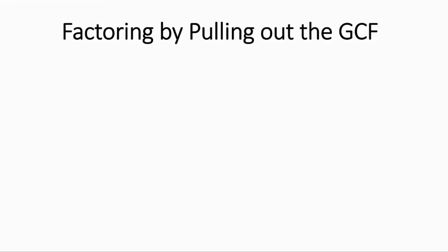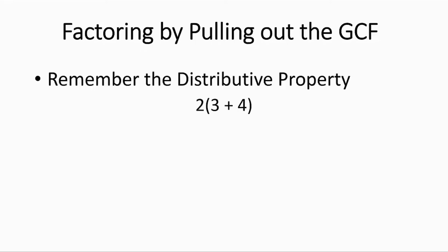Factoring by pulling out the greatest common factor. Do you remember the distributive property? Using integer decomposition: 2 times 3 is 6, plus 2 times 4, which is 8 — together 14, and we knew that because this was just 2 times 7. This is just a property of numbers — we can distribute these two. Notice that 2 is also a factor of both 6 and 8.